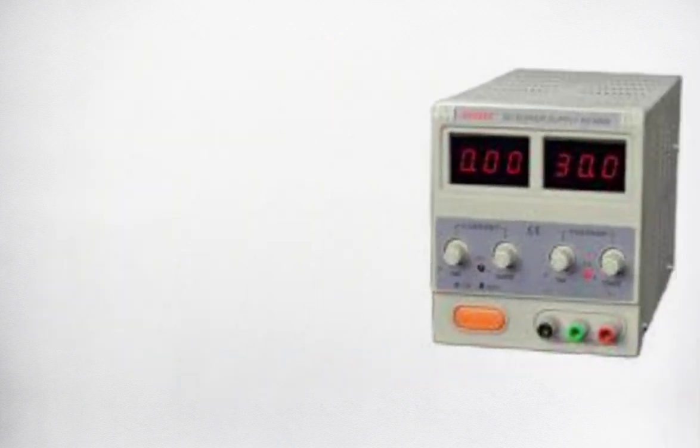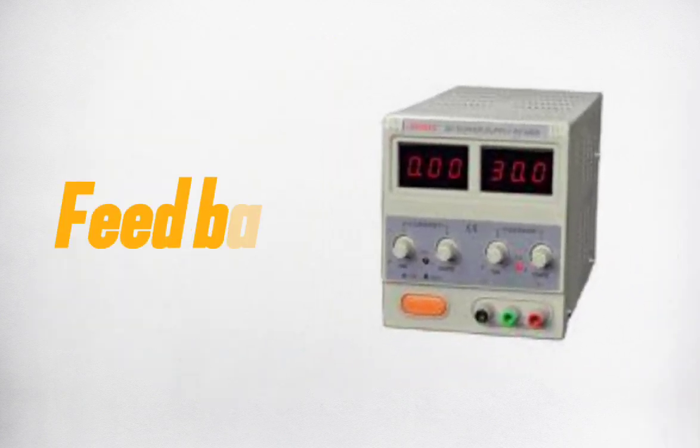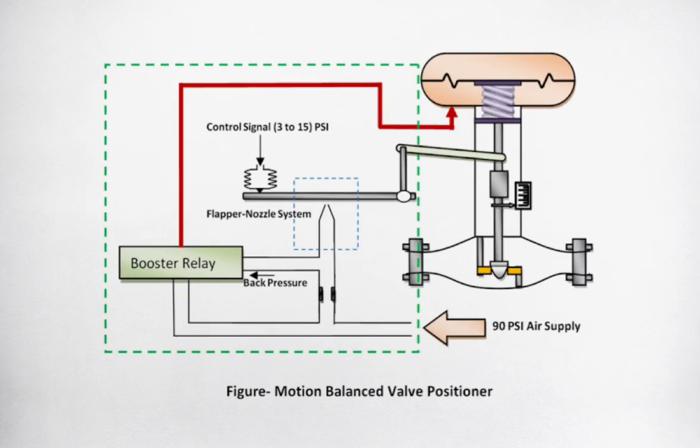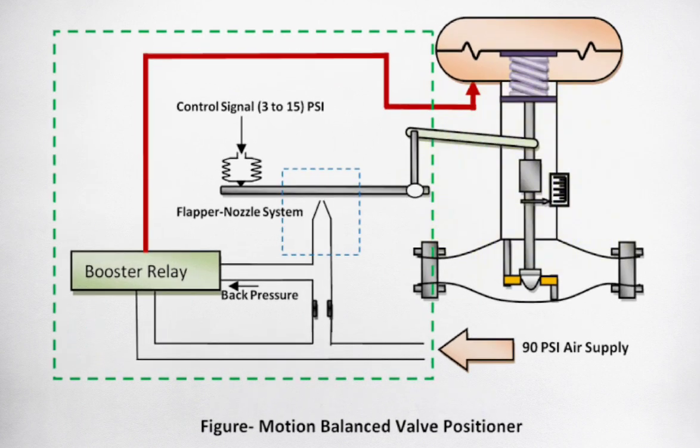Check the supply voltage. If the feedback to the valve positioner is through the mechanical link, check its condition. If the mechanical link is corroded, replace it. Also check other valve accessories: air volume booster, trip valve, quick exhaust valve, etc., if available.